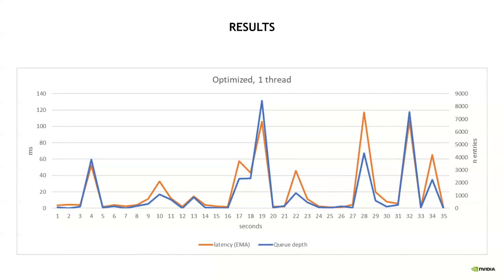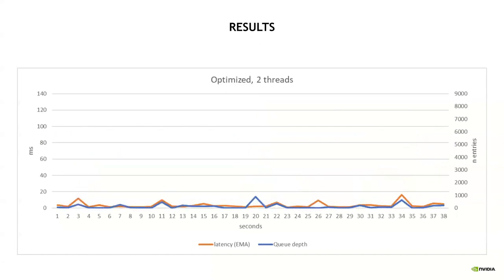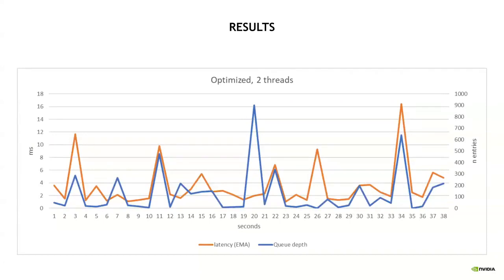Zooming the graph 10 times to highlight some behavior, there are still spikes in the queue, and as offloads are waiting the latency increases. Then, a second thread is added to manage offloads in parallel. The graph keeps the same scale as the previous one, and we can see that the process is more stable. Zooming in, the average is between 4 and 6 milliseconds, with spikes sometimes. Overall, the latency was reduced 100-fold, going down from 800 milliseconds to less than 8 milliseconds.